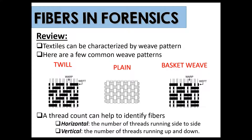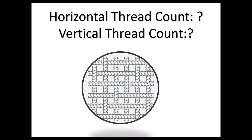If we want to get a quantitative measure, we can use something called a thread count to help us further identify fibers. We have a horizontal thread count, which is the number of threads that run side to side, and a vertical thread count, which is the number of threads that run up and down in a textile. Here on the screen you have a snapshot of a fiber — count the horizontal and vertical threads, and you'll notice there are six horizontal threads and six vertical threads in this snapshot.